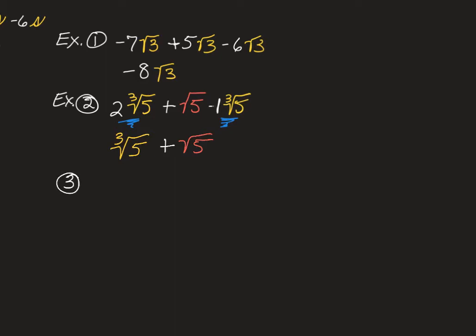Example number 3. We have 3 square root of 6 minus 2 square root of 6 plus 5 square root of 2, and let's say we're going to add to that 3 square root of 2. In this case, the like terms are right beside each other. So, 3 square root of 6 minus 2 square root of 6, we just have 1 square root of 6. But then, the 5 square root of 2 plus 3 square root of 2 will give us 8 square root of 2.